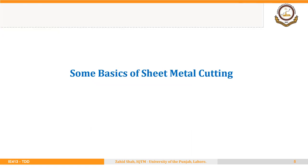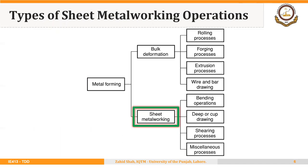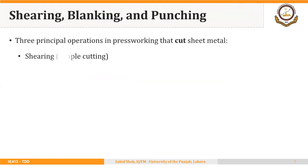First we will discuss some basics of sheet metal cutting. As a recall, sheet metal working operations are one of two types — metal forming operations or metal deformation operations — and today we are going to focus on shearing processes. There are three principal operations in press working that cut the sheet metal: shearing or simple cutting, blanking, and punching. Punching is also called piercing operation.